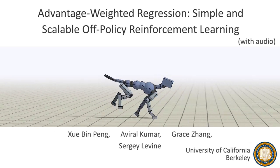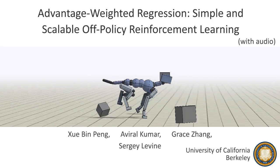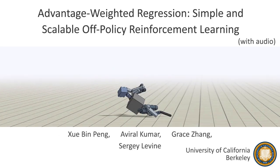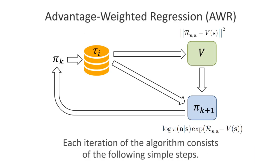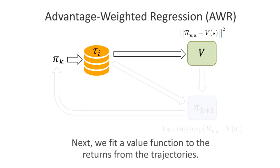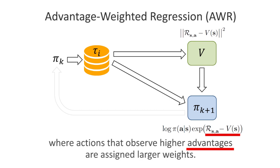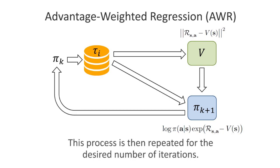In this work, we present Advantage Weighted Regression, a simple off-policy reinforcement learning algorithm that performs policy updates using only supervised learning. Each iteration of the algorithm consists of the following simple steps. First, the current policy is used to collect trajectories which are stored in a replay buffer. Next, we fit a value function to the returns from the trajectories. Then, we fit a new policy by solving a supervised regression problem where actions that observe higher advantages are assigned larger weights. This process is then repeated for the desired number of iterations.